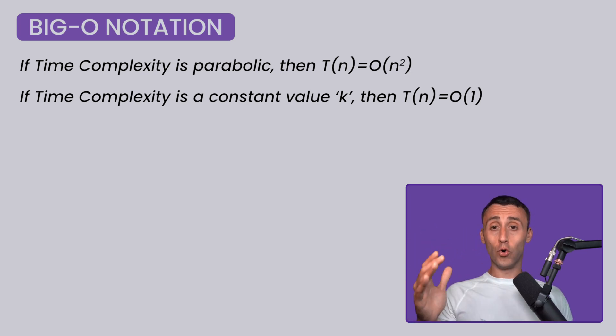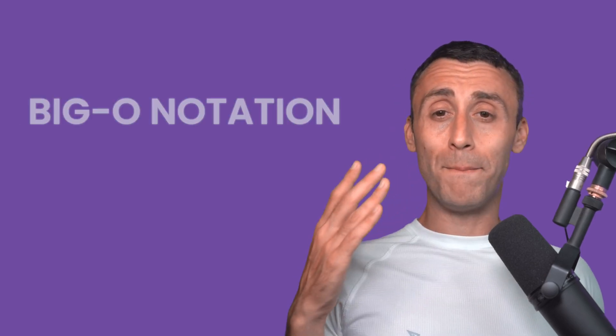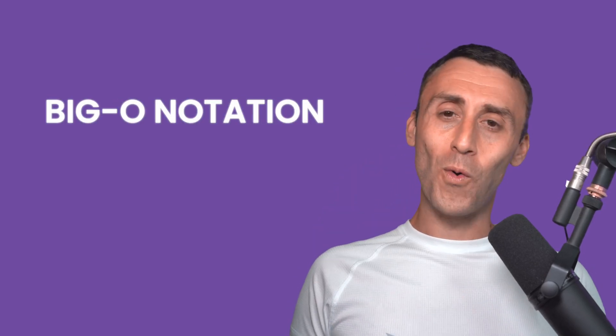If the time complexity is constant, which in other words is independent of the input size, in big O notation, the time complexity becomes O of 1. So, this is all that you need to know about the big O notation and what it means.